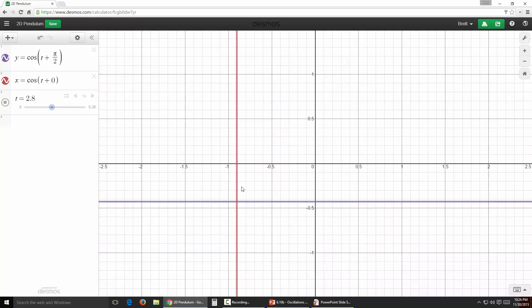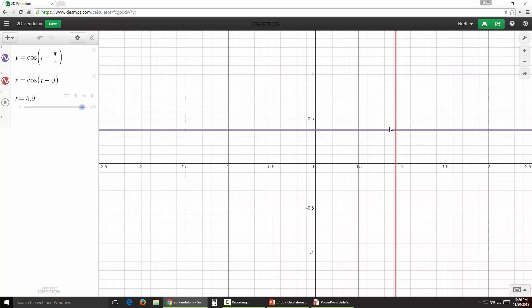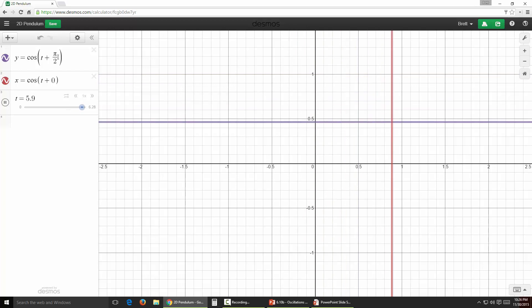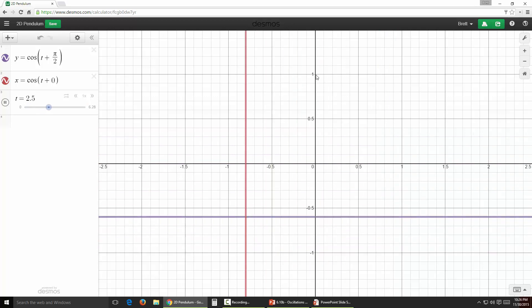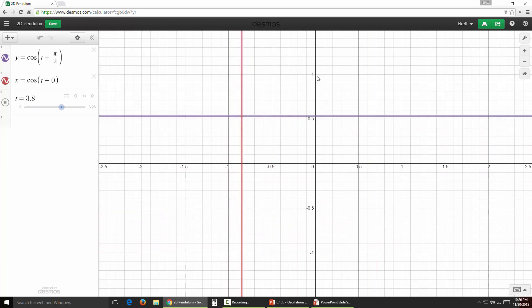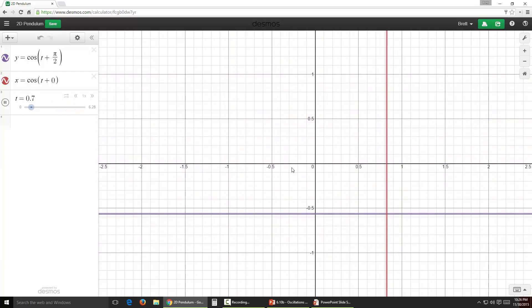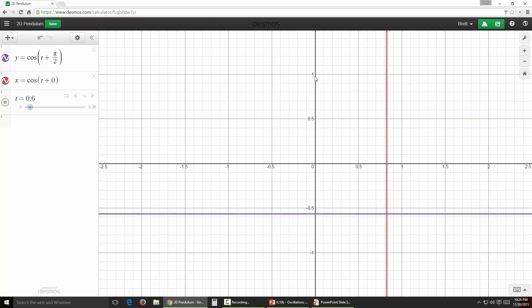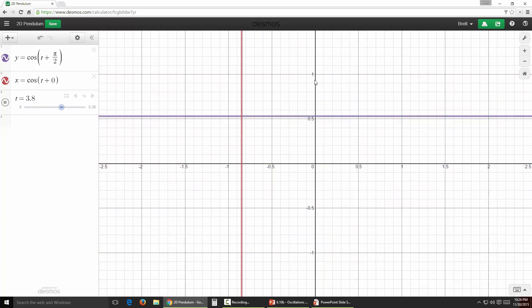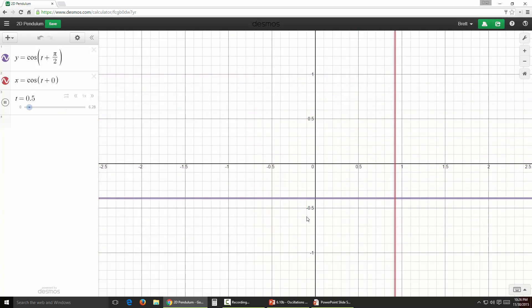If you look at the intersection of those two oscillations, it's going to trace out a circle. Now, in order for that to happen, these guys need to be out of phase so that when one is at a maximum—when the vertical line here is at a maximum—then the horizontal line is at a minimum, and vice versa. So they're completely out of phase.